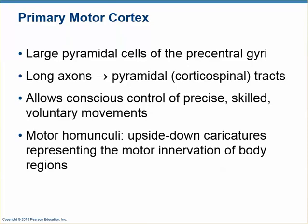The motor cortex is the beginning of long myelinated fibers that go right down into the spine — they're called the corticospinal tracts, because they come from the primary motor cortex and go to the spine. There, they synapse with the lower motor neurons and go out into the periphery. This is all about precise voluntary movement.